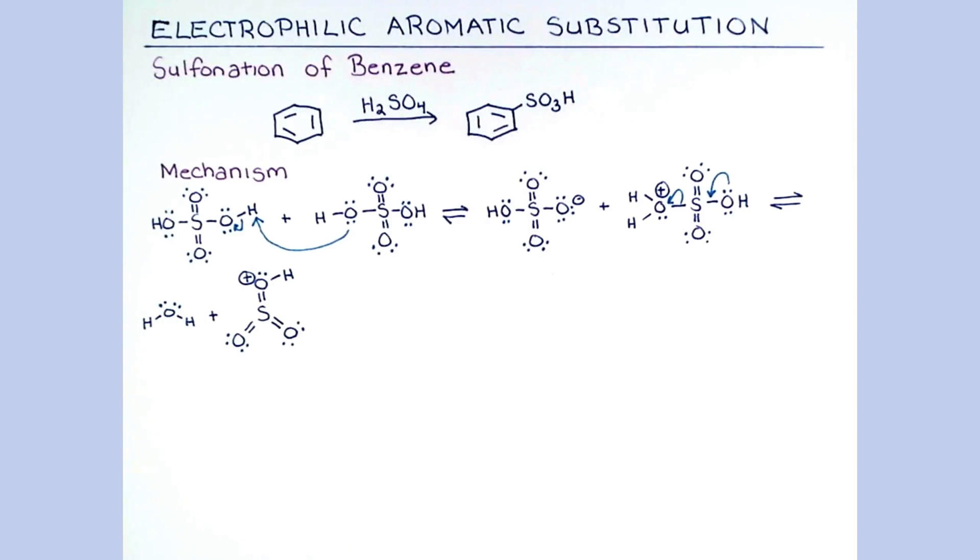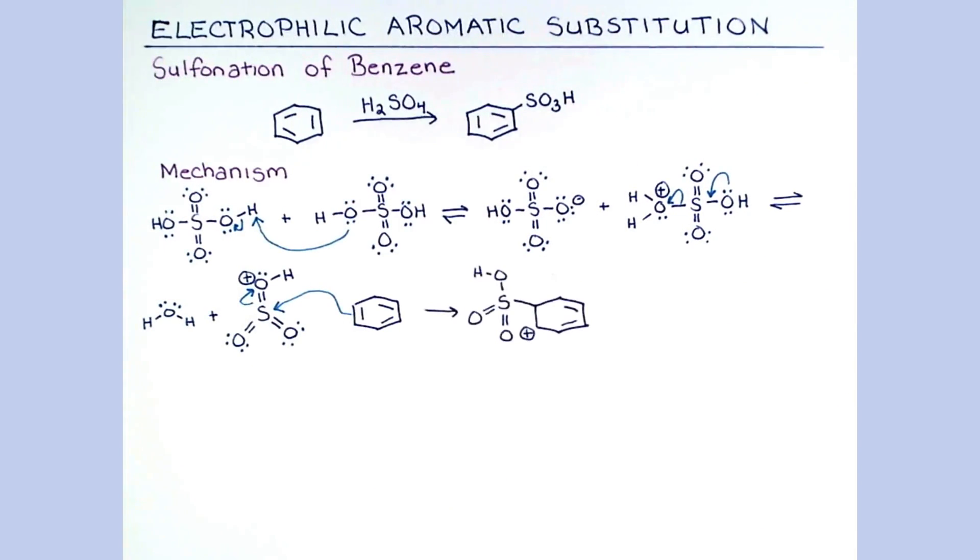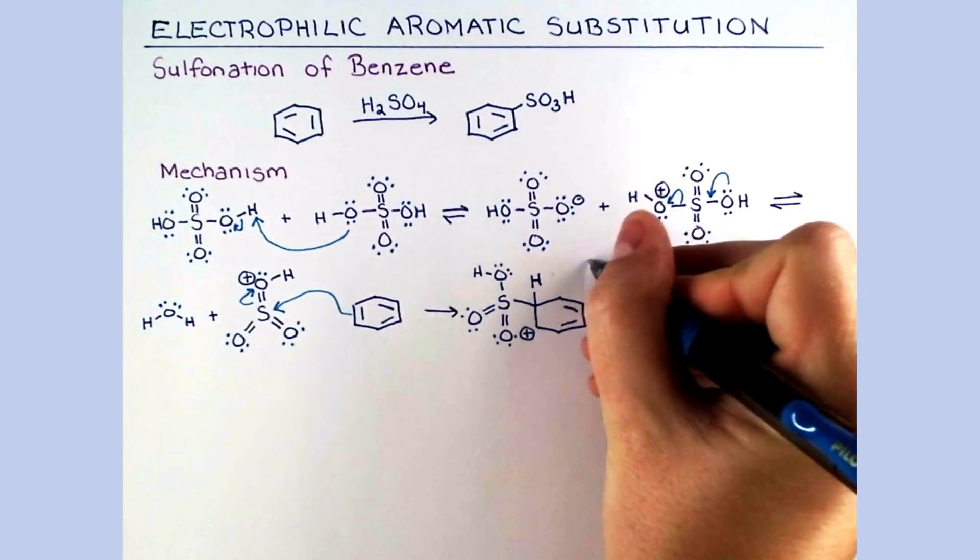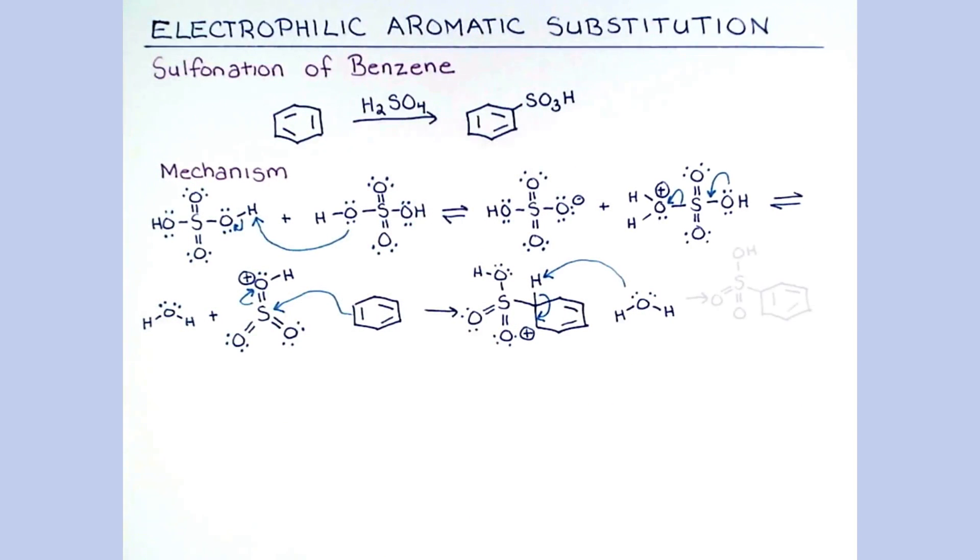Benzene can now attack with its double bond to give an intermediate carbocation. The resonance stabilized conjugate base of sulfuric acid is not a good nucleophile. So we can show water deprotonating this molecule to form our sulfonic acid.